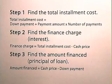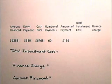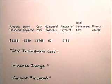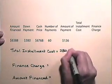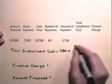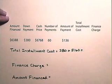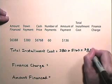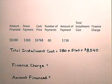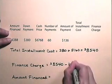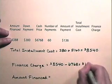Now let's look at an exercise. The amount financed is $6,388, the down payment is $380, the cash price is $6,768, the number of payments is 60, and the amount of each payment is $136. So the total installment cost is the down payment, $380, plus $8,160 (which is 60 times $136), giving a total installment cost of $8,540. The finance charge is $8,540 subtract the cash price, $6,768, which is $1,772.